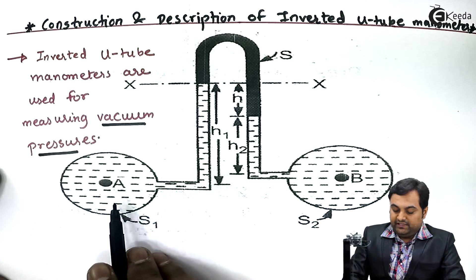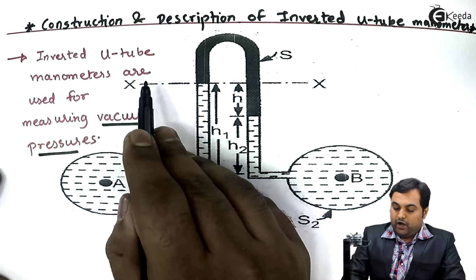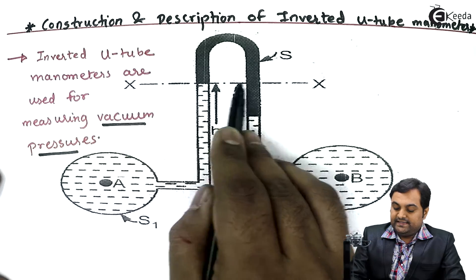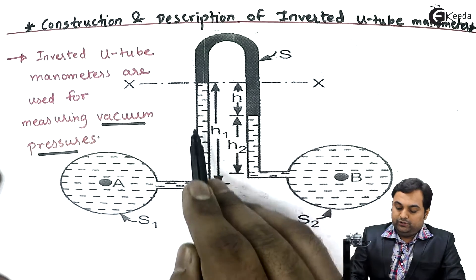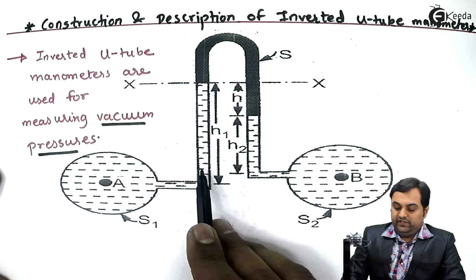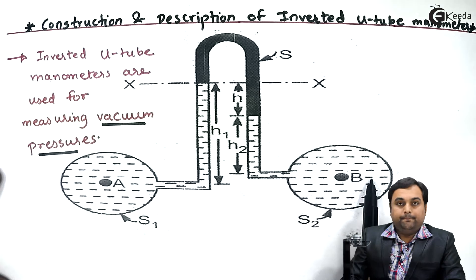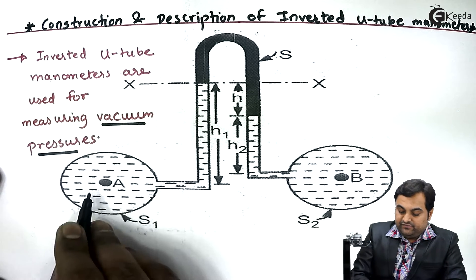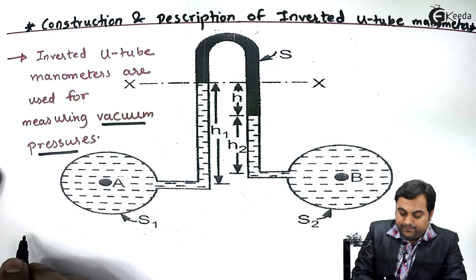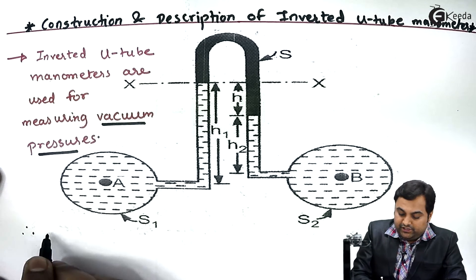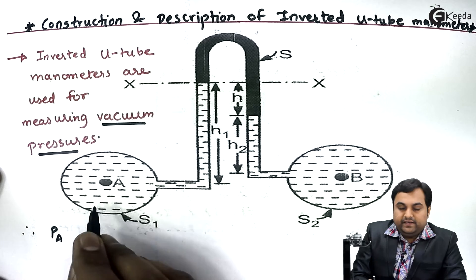For the calculation of the difference in pressure, we need to balance the left limb and the right limb. As we can see here, there is section XX. Below this we have the left limb and the right limb. So to balance this, I'll write the pressure equation.